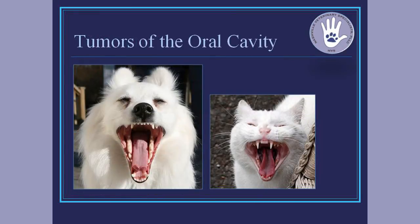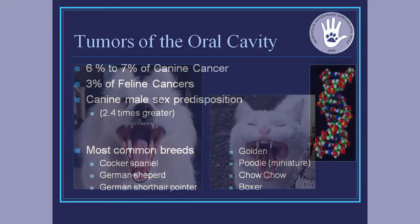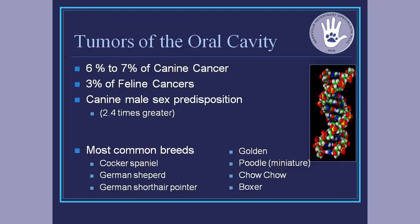Starting out, we'll talk about the oral cavity. When we look at the oral cavity, it makes up about six to seven percent of all the canine cancers we see on a yearly basis, and it makes up about three percent of all the feline cancers we see on a yearly basis.